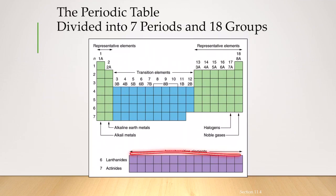And then the inner transition elements, you have the lanthanide series and the actinide series. And there are totally 14 columns in here.